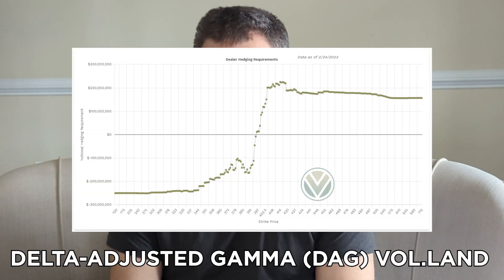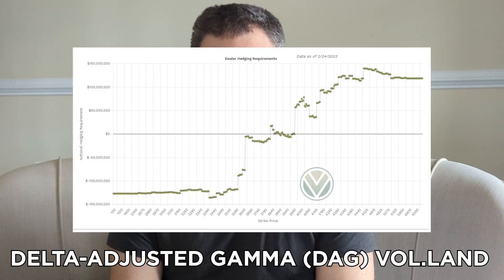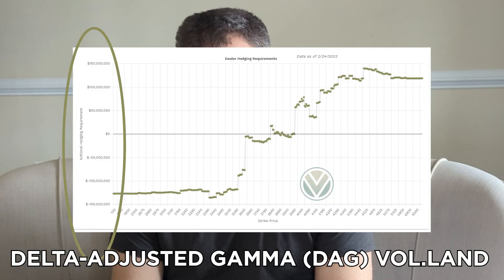SPX is well-known as the underlying with the highest average daily option notional value traded. However, when you look at the SPX notional gamma versus SPY notional gamma, it doesn't look that way. Notice the y-axis on the SPY DAG chart, then the y-axis on the SPX DAG chart. It would appear at first glance that SPY has double the impact of SPX.